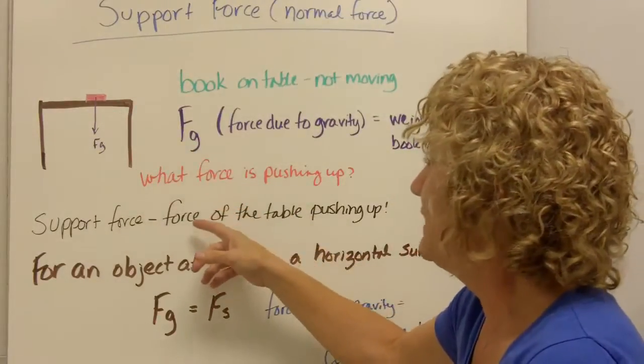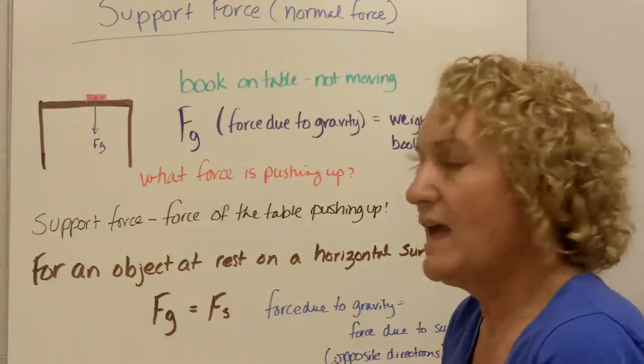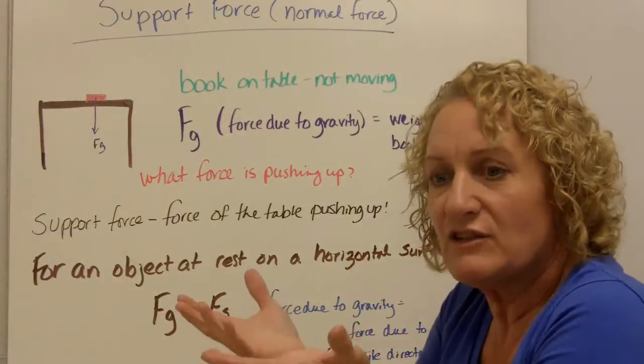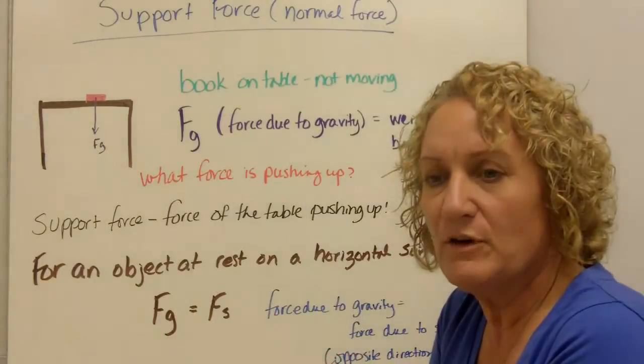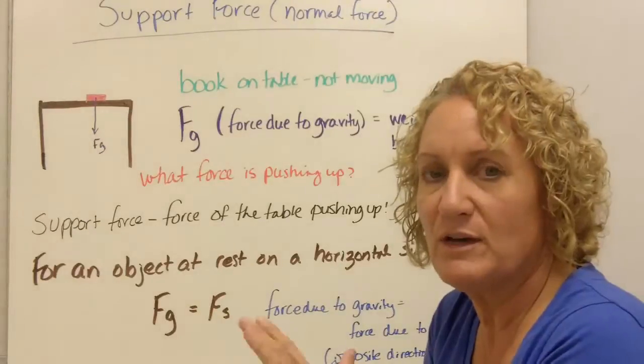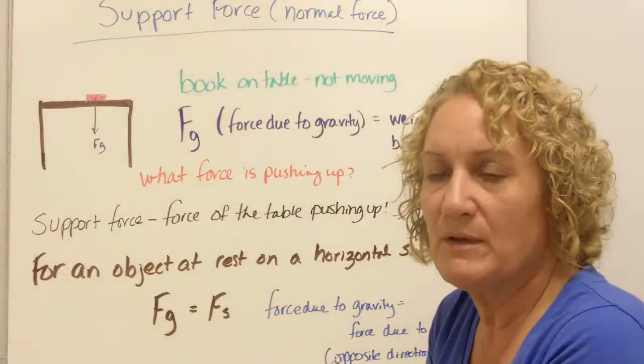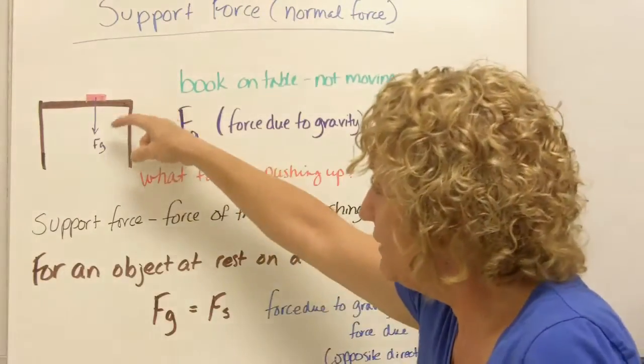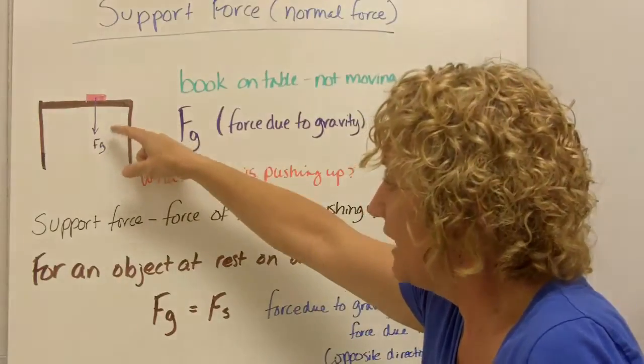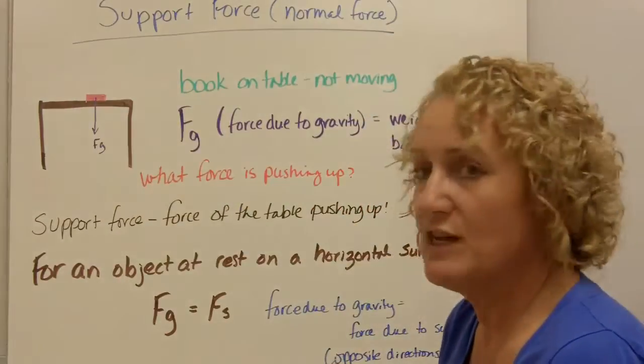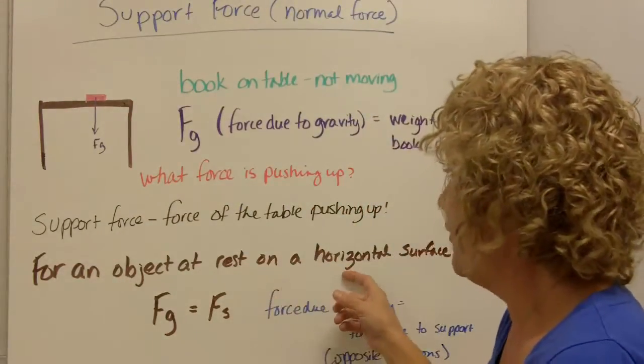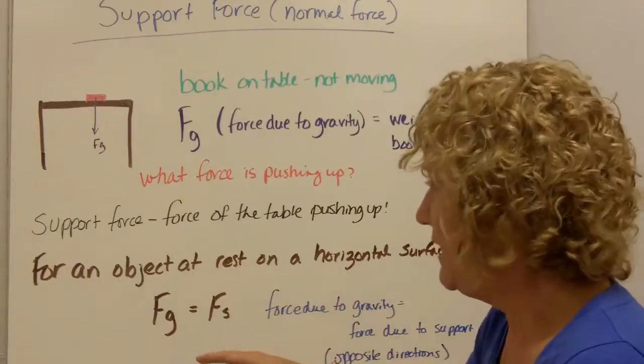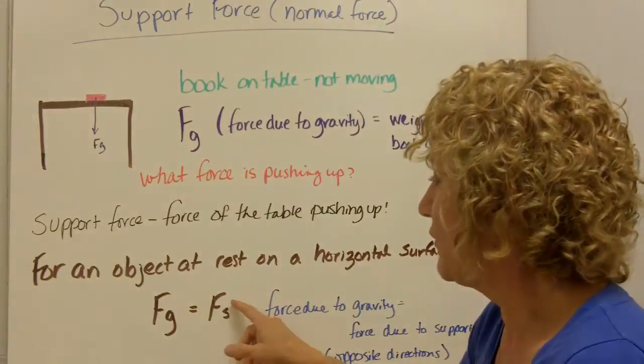Well, it's actually called the support force. And what's happening is the table is actually pushing up on the book. That's why the book doesn't fall through the table. That's why the book is in equilibrium because the weight of the book is pushing down and the support force is pushing up. So for an object that rests on a horizontal surface, that's this way,